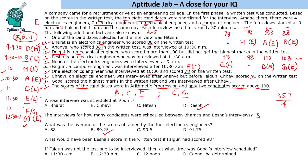What would Isha's score be if Fagun scored 98? Since Fagun is 98, Isha would be 73 — the only remaining score. If Fagun was not the last person interviewed, then Gopal is last and his interview would be scheduled at 12:30 AM.